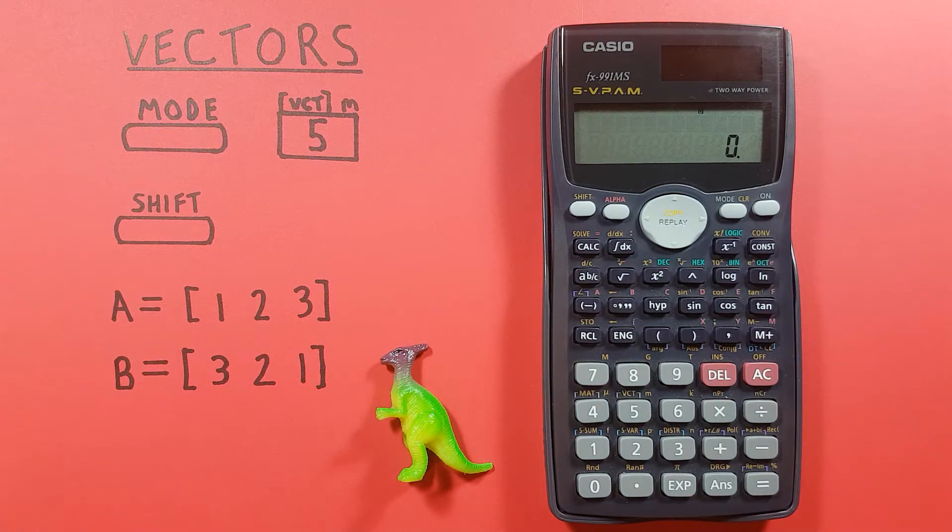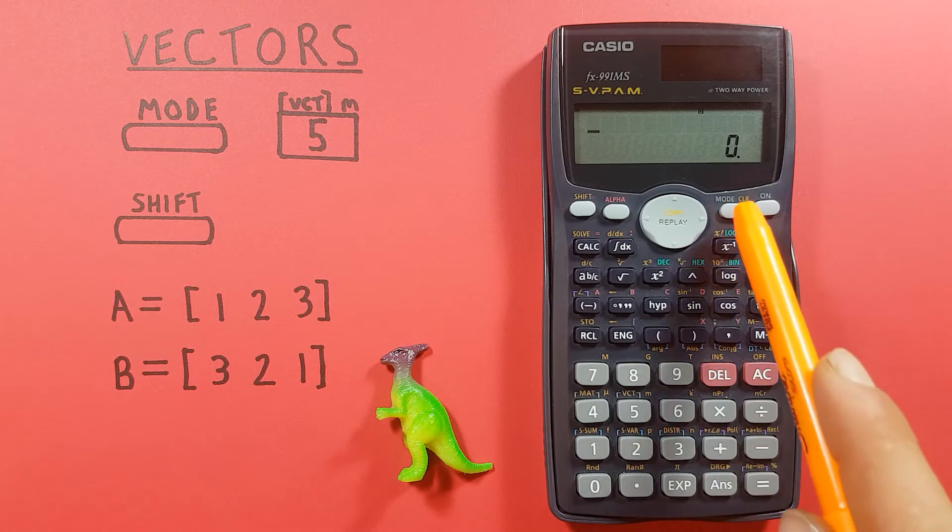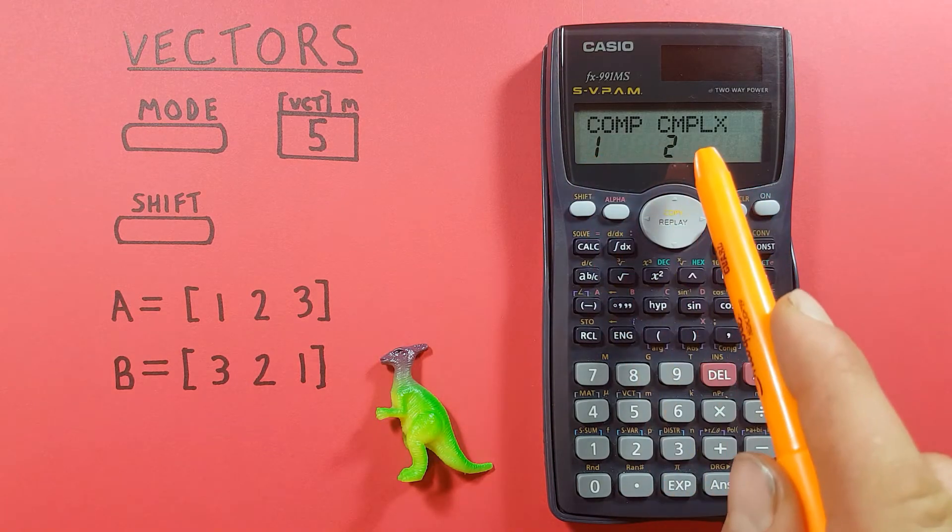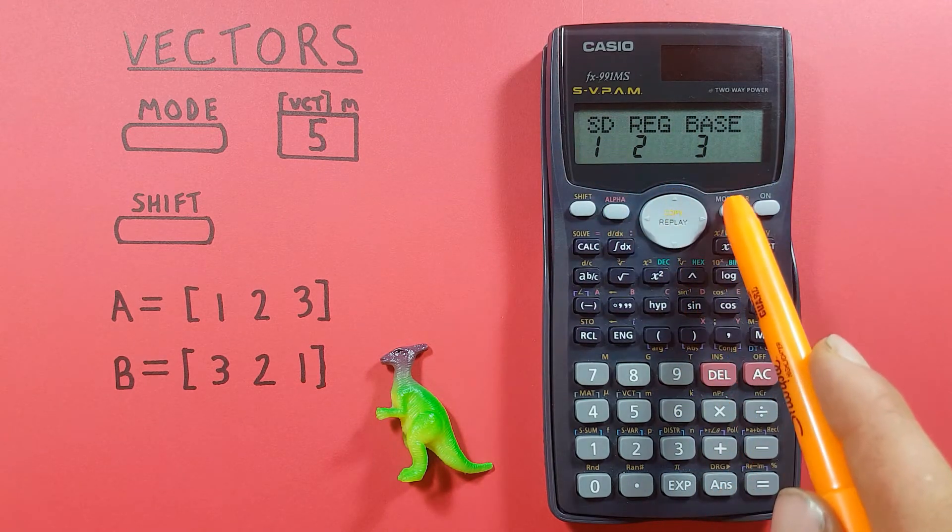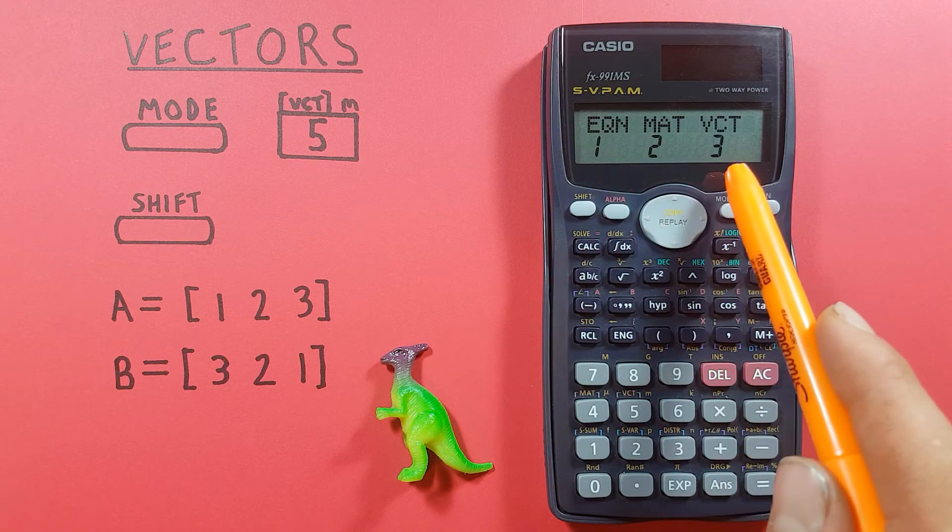Now the first thing we're going to want to do if we want to work with vectors on this calculator is put our calculator into vector mode. We can do this by pressing the mode key once to get to this menu, press it again to get to this menu, and press it a third time to get to this menu here.